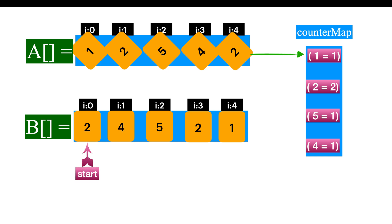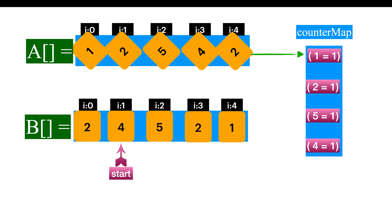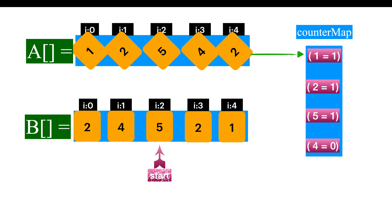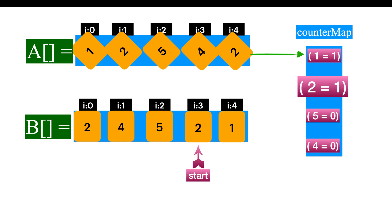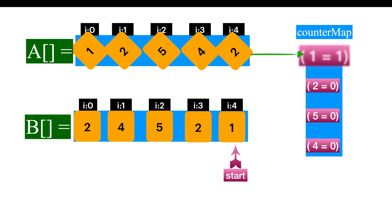Now let's compare from the second array. 2 is present in hash map, so decrement the counter — now the counter will be 1. Again, 4 is present in hash map, so decrement the counter. And 5 is present in hash map, so decrement the counter. Again, 2 is present in hash map with counter greater than 0, so decrement the counter. Then 1 is present in hash map, so decrement the counter. We already reached the end of the array, so it means all elements of array 1 are equal to array 2, so we can return true.